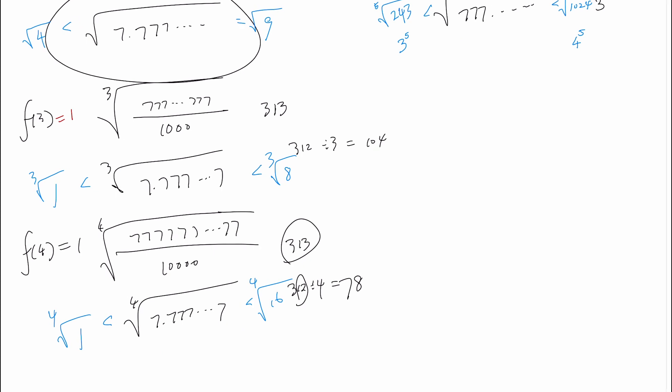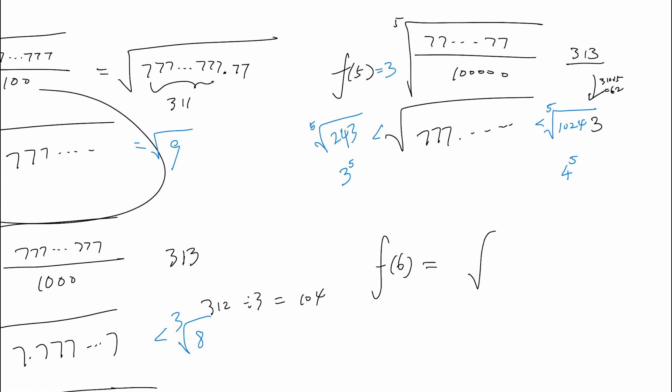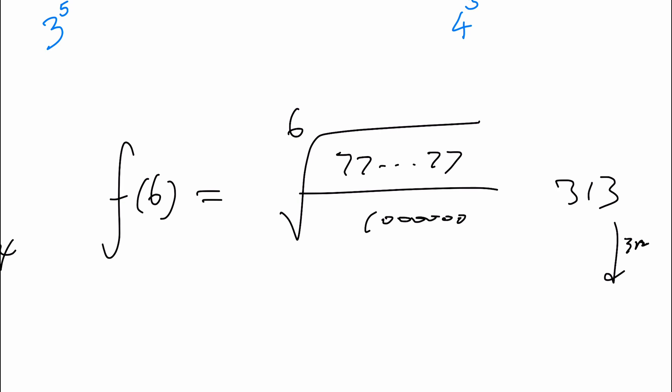Now, how about f(6)? f(6), that is going to be the sixth root of this giant number divided by, now we have six zeros behind it, and if we have 313, remember that the mod does not change, so if we have 312, 312 is both divisible by 2 and divisible by 3, which means that 312 is divisible by 6, and in fact it is 52 times that. So if we divide that result number by 10 to the 52, we would get 1 seven left. So we would have 7.777... Obviously we don't need to do a lot of math here, it's between the sixth root of 1 and the sixth root of 64, so f(6) is equal to 1.